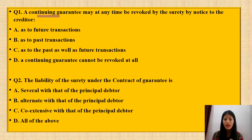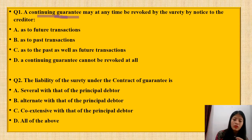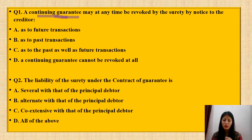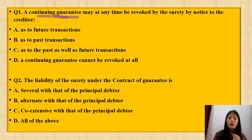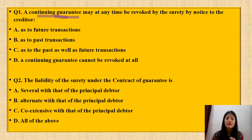Question 1 says: 'A continuing guarantee may at any time be revoked by the surety by notice to the creditor.' First, what is a continuing guarantee, and under which section is it defined? The options are: (A) as to the future transactions, (B) as to the past transactions, (C) as to the past as well as future transactions, (D) a continuing guarantee cannot be revoked at all. What is the correct option?